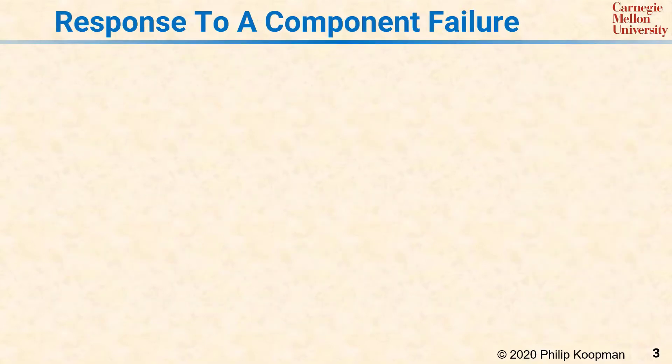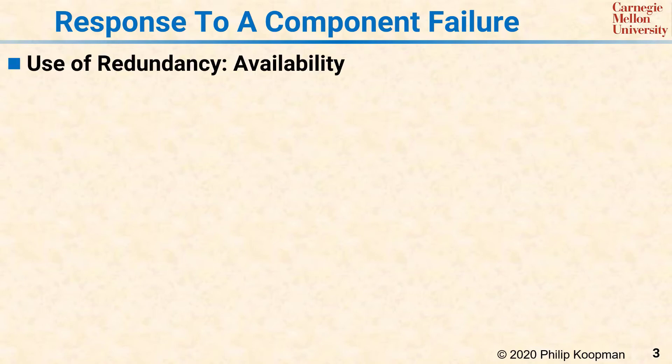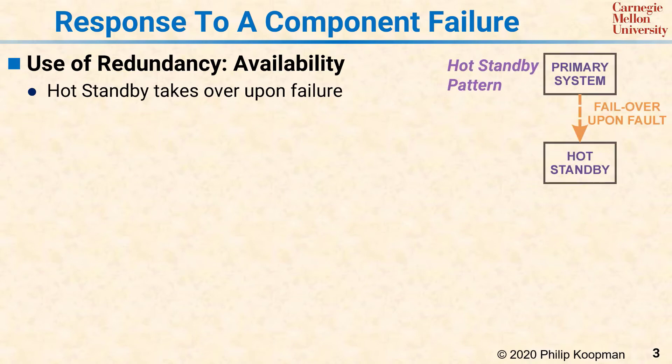The proper use of redundancy starts with considering what purpose the redundancy serves in terms of system dependability. The most common use is to improve availability, often done with a primary system and a standby system, such as a hot standby that is continuously running as a shadow of the primary system.